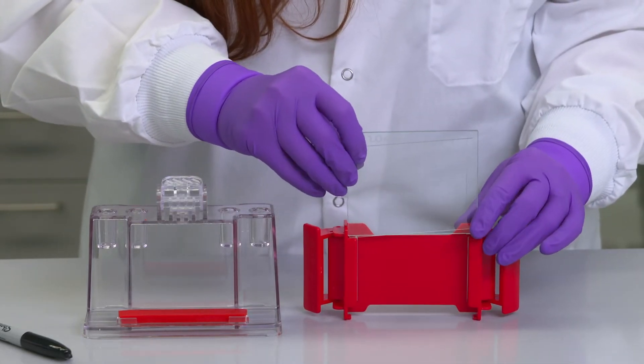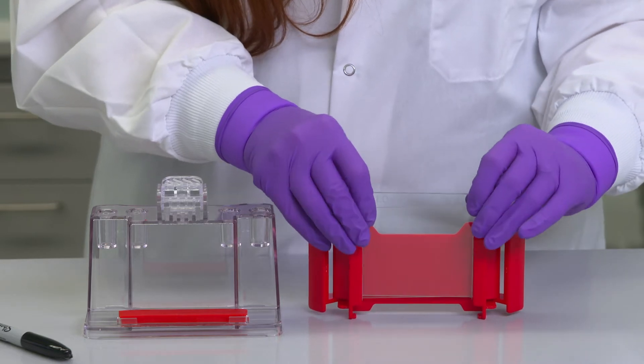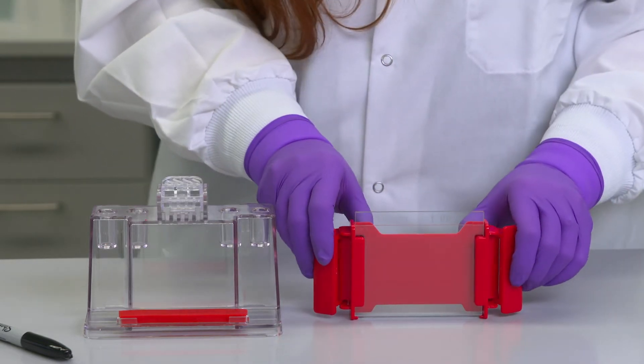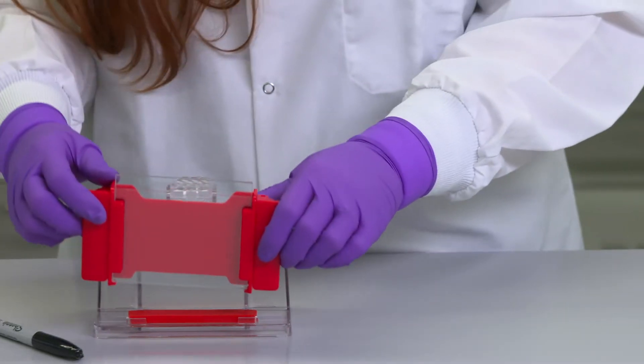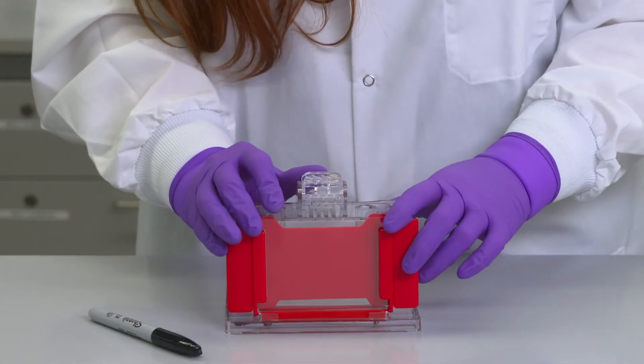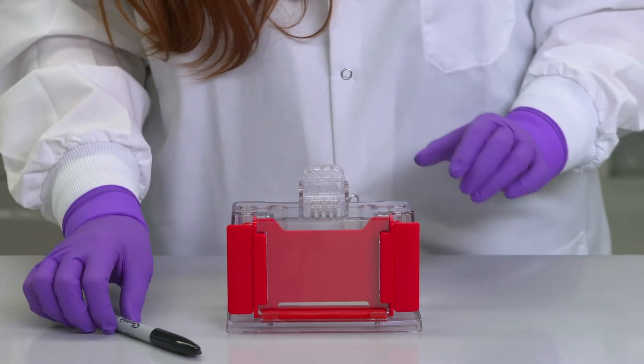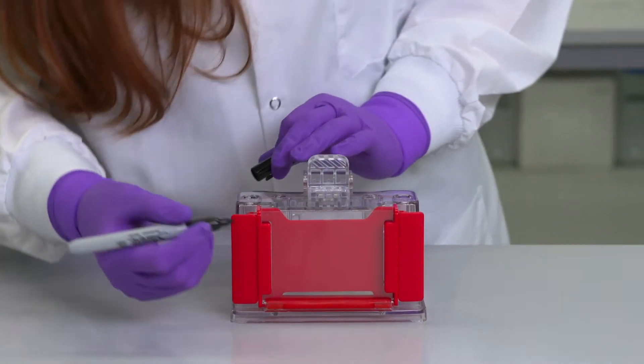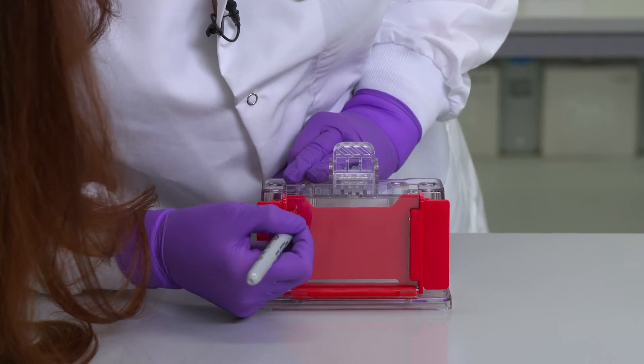Here I'll be using a mini gel cassette with a one millimeter thickness. The glass plates should be cleaned with alcohol and a lint-free wipe prior to use. The desired height of the resolving gel can be marked on the glass plates, usually one centimeter below the comb teeth.